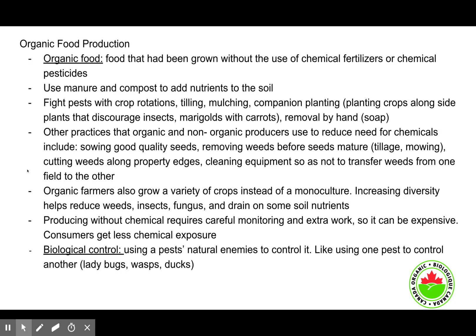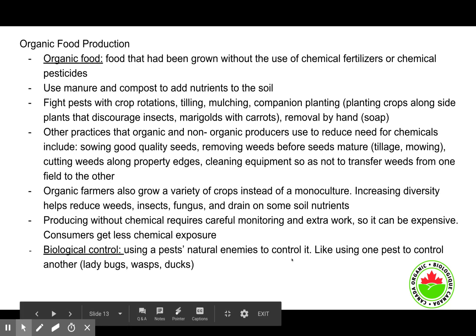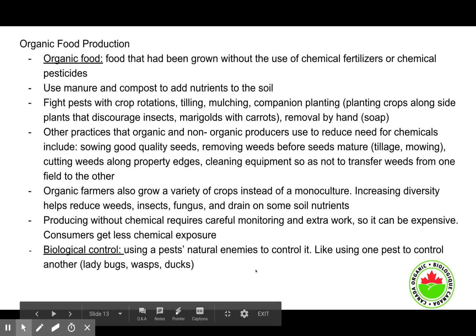Organic farmers also use a wide variety of crops instead of monocultures. Increasing crop diversity helps reduce weeds, insects, fungus, and drains on soil nutrients. However, producing without chemicals requires careful monitoring and extra work, so it can be expensive — though consumers get less chemical exposure.